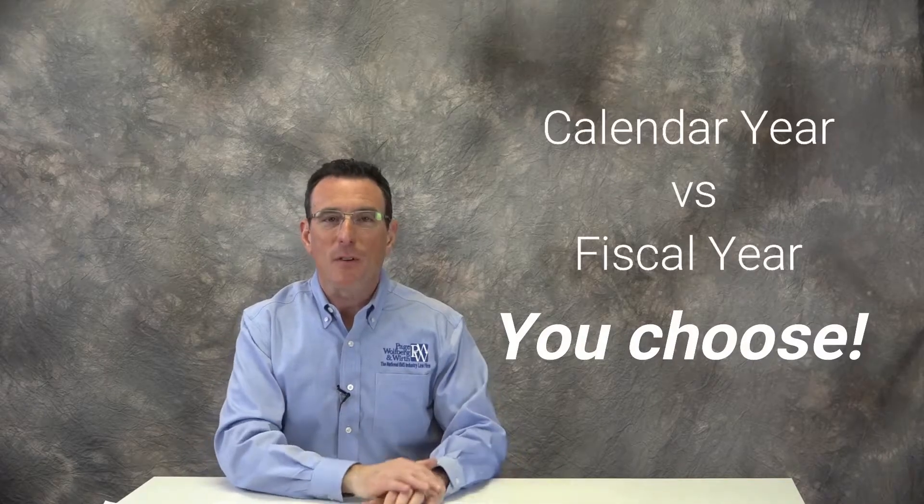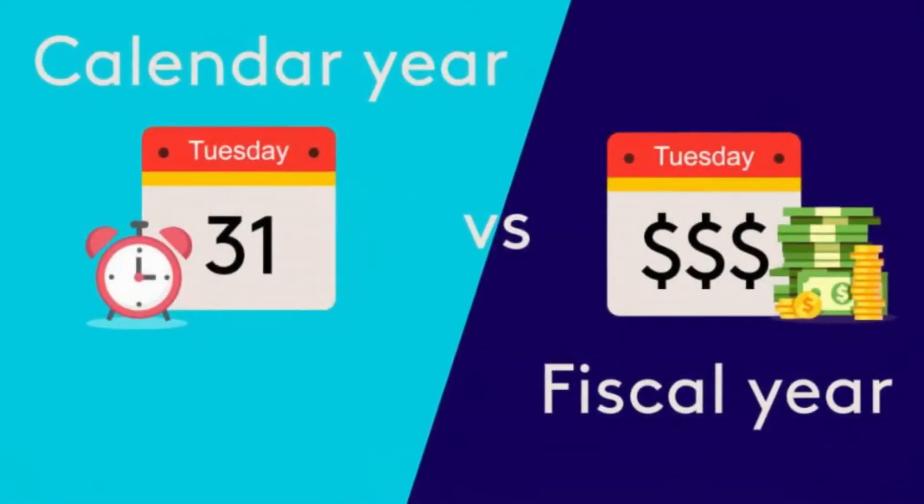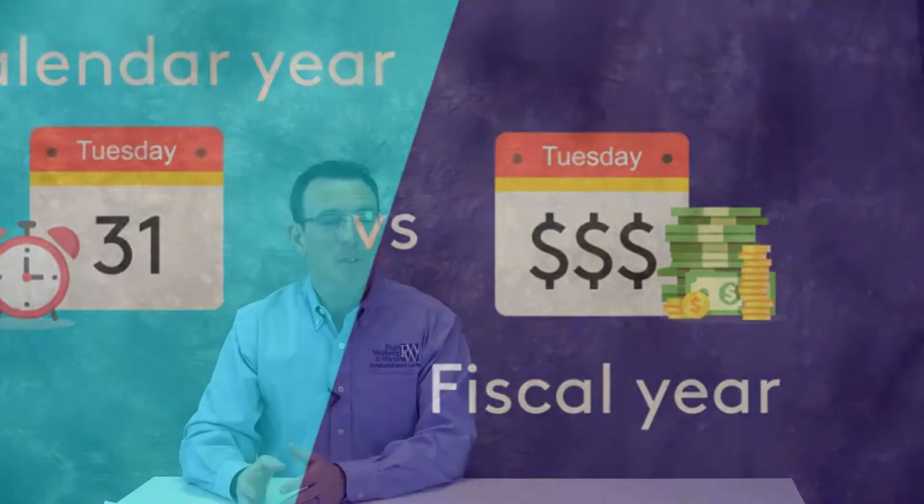If you, like most ambulance services, do your books and your accounting from January 1st to December 31st, that's a calendar year. If you have a fiscal year, for example, July 1st to June 30th, you can use that. But the first thing you need to do is let your MAC know.